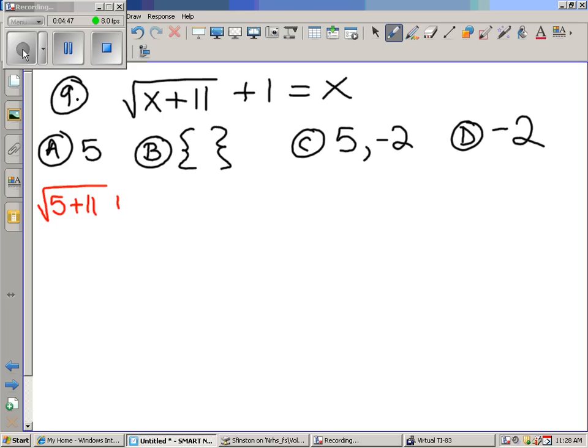Just throw five in for every time you see an X. So that's going to be square root of five plus 11 plus one equals five. Five plus 11 is 16. Square root of 16 plus one equals five. Square root of 16 is four. Does four plus one equal five? Oh, my gosh. So this works,